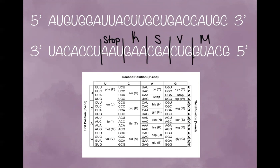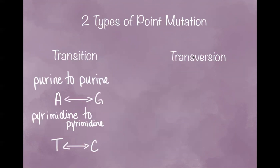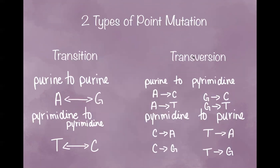Now let's look at some important terms of point mutation. There are two types of point mutation: transition and transversion. Transition is a base change from purine to purine or pyrimidine to pyrimidine, and here are some examples. Transversion is a base change from purine to pyrimidine or from pyrimidine to purine, and here are some examples.